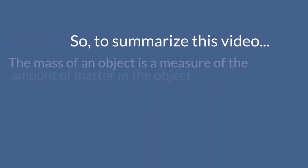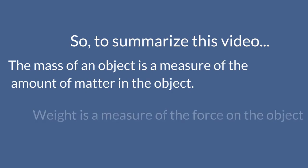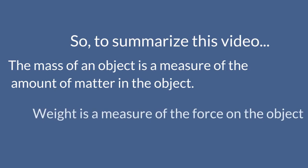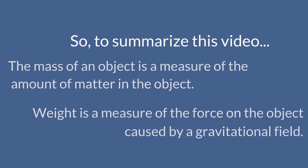To summarize: the mass of an object is a measure of the amount of matter in the object. Weight is a measure of the force on the object caused by a gravitational field.